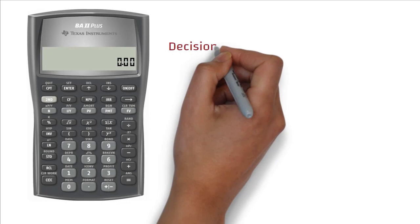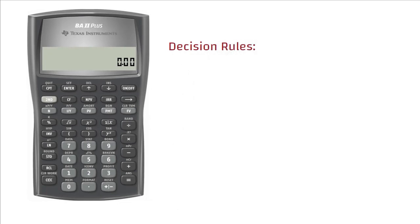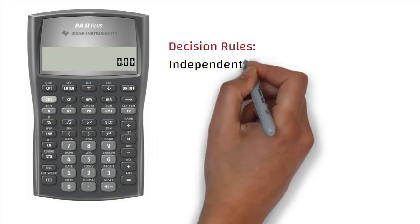Decision rules. If projects A and B are independent, select projects that have NPV greater than 0 or positive. So both project A and B should be accepted.